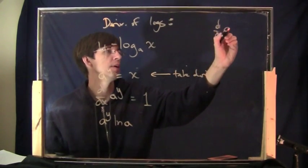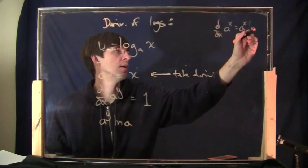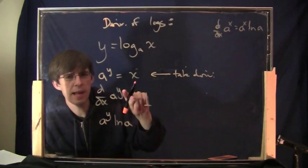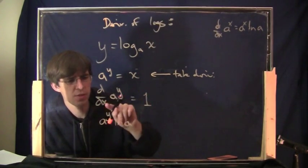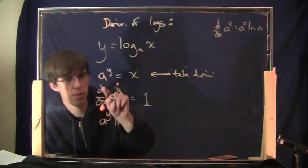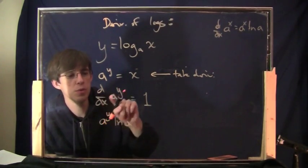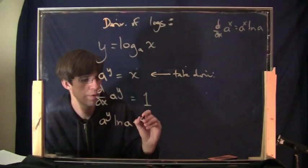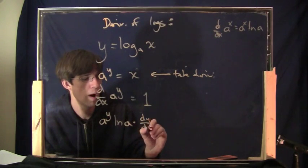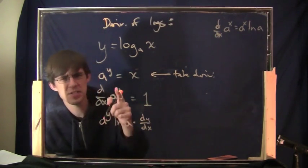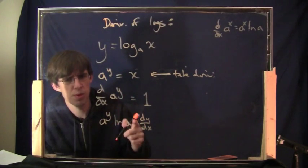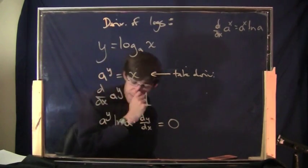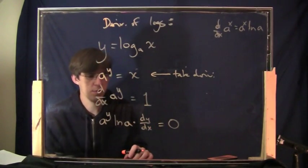Using this formula: derivative of a to the x equals a to the x times ln of a. So the derivative of the left side is a to the y times ln of a. Now it's not x inside the exponent — it's y. That's a little weird; I'm taking the derivative with respect to x, but there's a y in there. In that case, you use the chain rule because you have something other than x up here, so we multiply by the derivative of y, which is dy/dx. This is the step which is technically referred to as the implicit derivative.